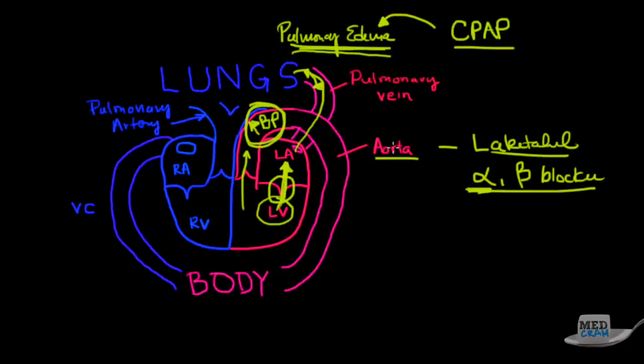And so what happened here is because it's an alpha blocker, I was able to dilate the peripheral vasculature and reduce the blood pressure in the aorta. And as a result, more blood started to go through the aortic valve into the aorta. Why? Because I decreased afterload. And by decreasing afterload, I was able to allow more cardiac output to come into the aorta and less to go back from the left ventricle into the left atrium.